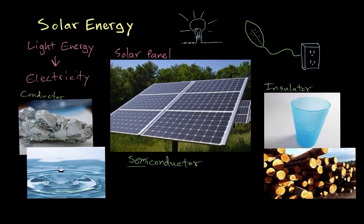So those are the two main types, and a semiconductor is something in between. This interesting in-between nature of semiconductors allows us to do a lot of things. Really, all of electronics are based on semiconductors, sometimes acting like insulators and sometimes acting like conductors. The computer you're watching this on is made of lots of semiconductors put together in complicated ways.